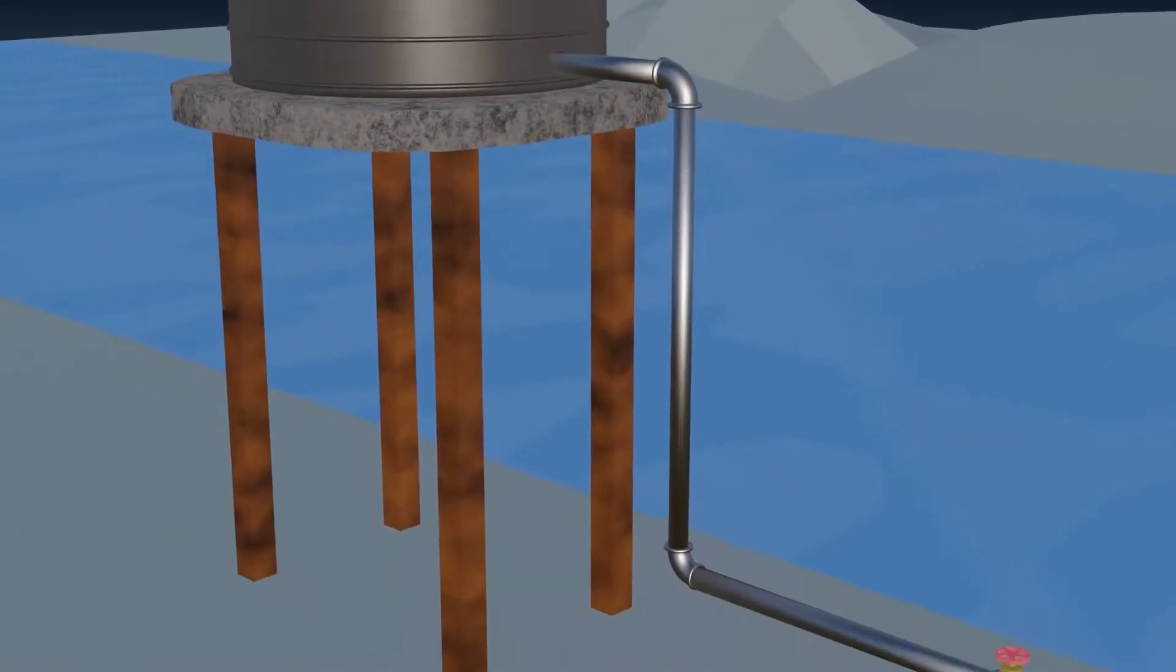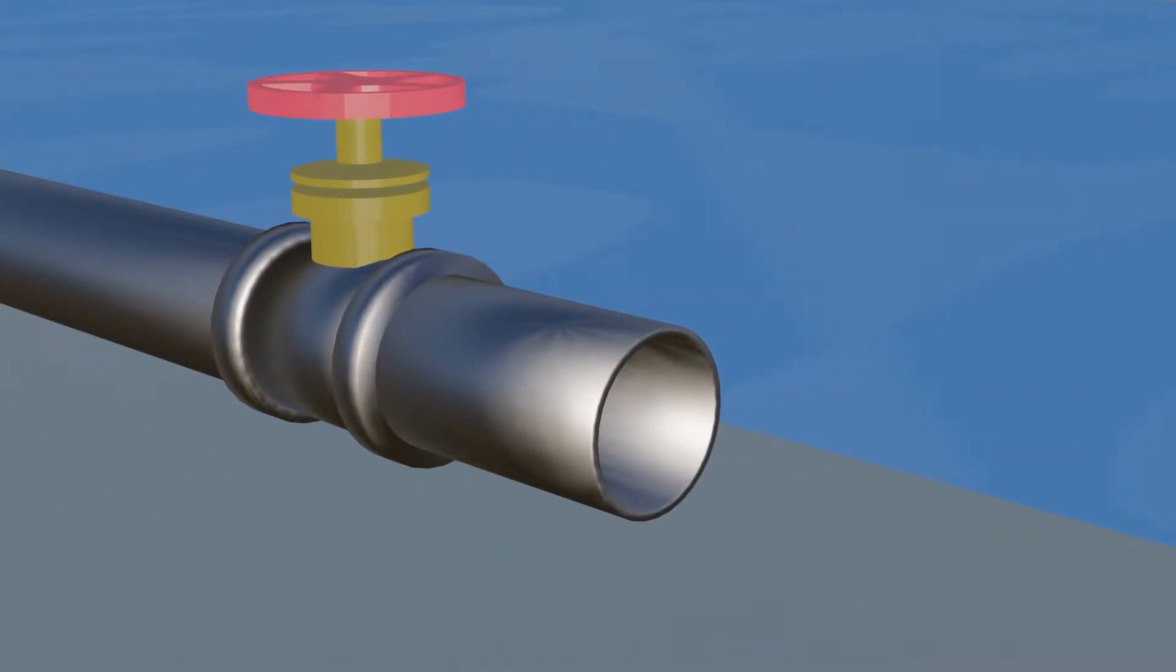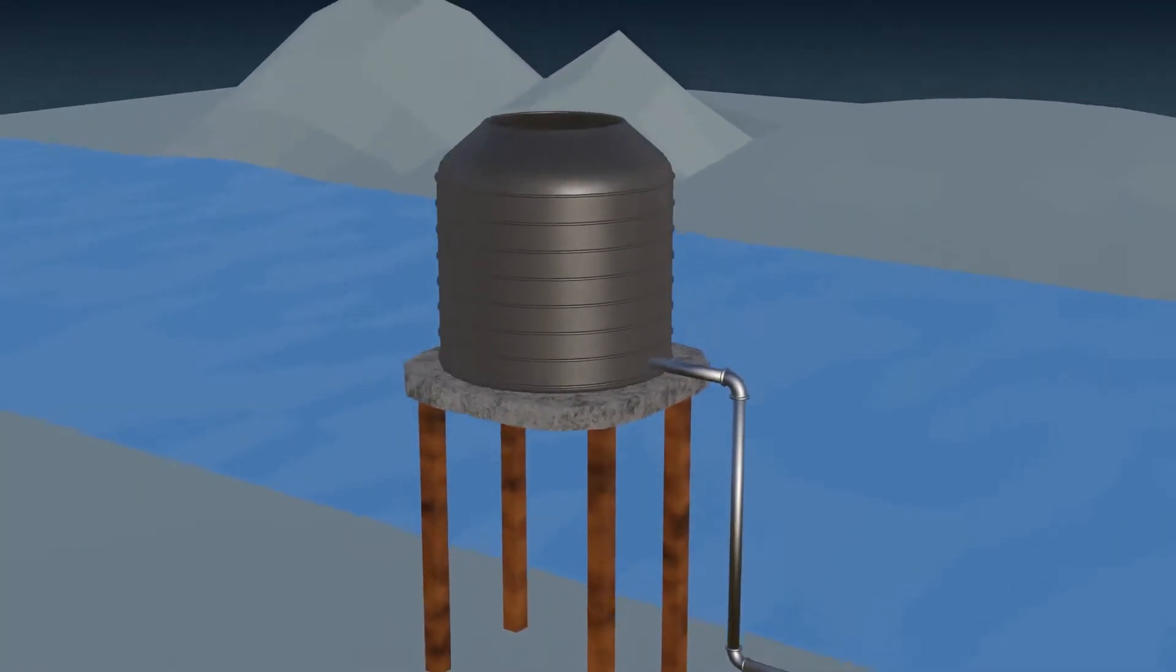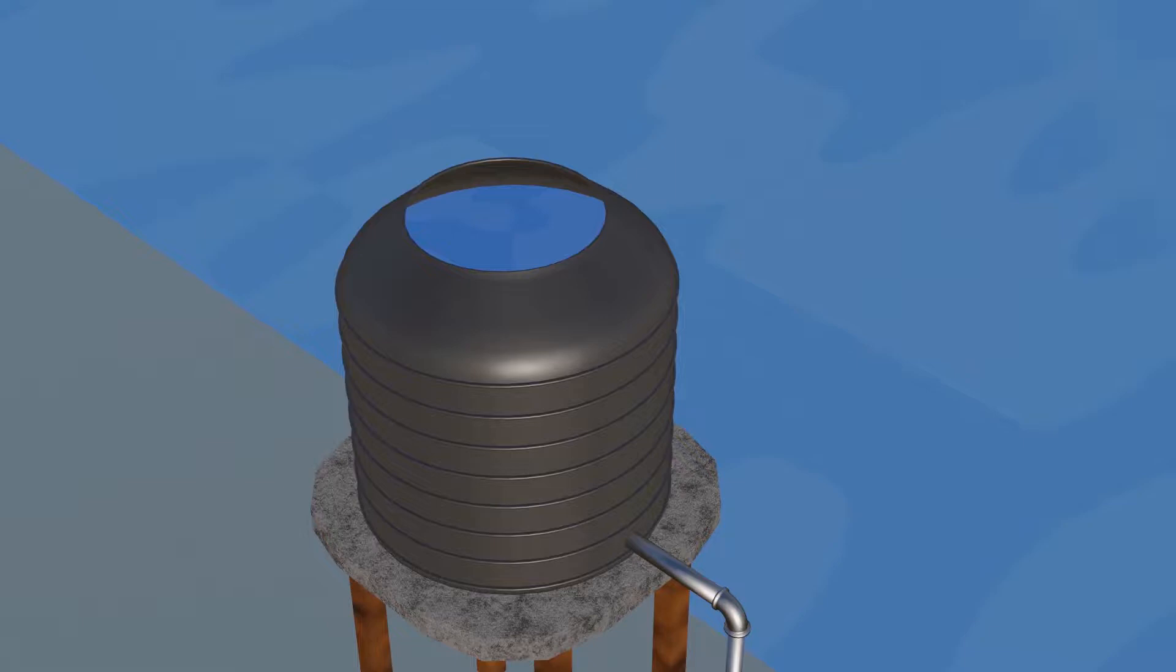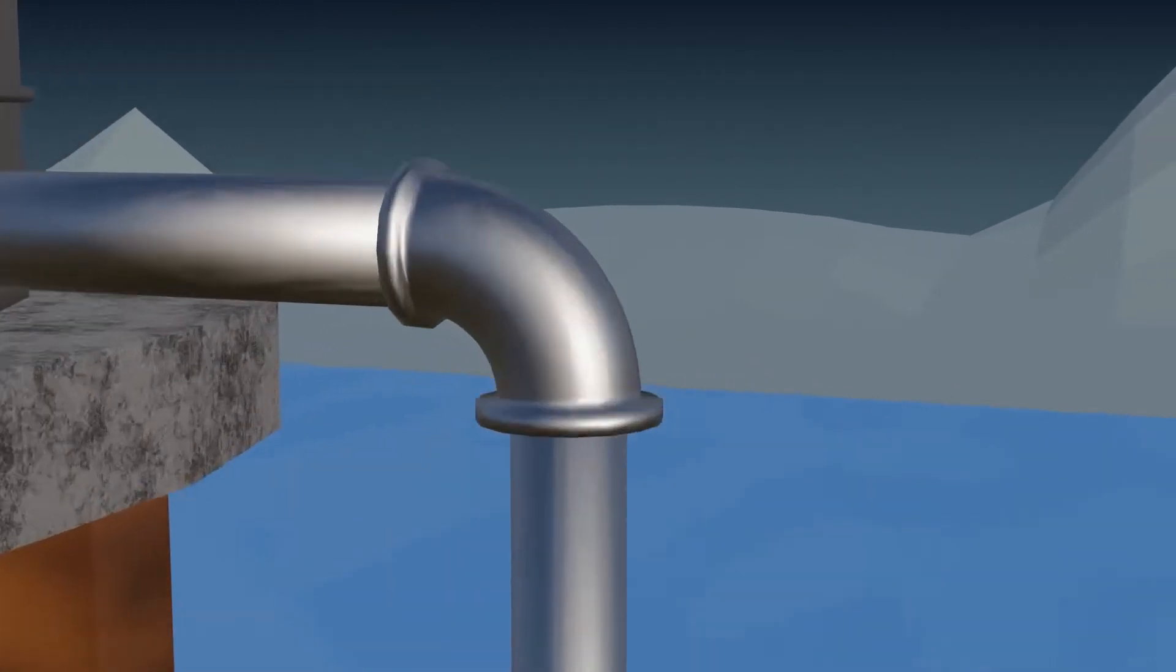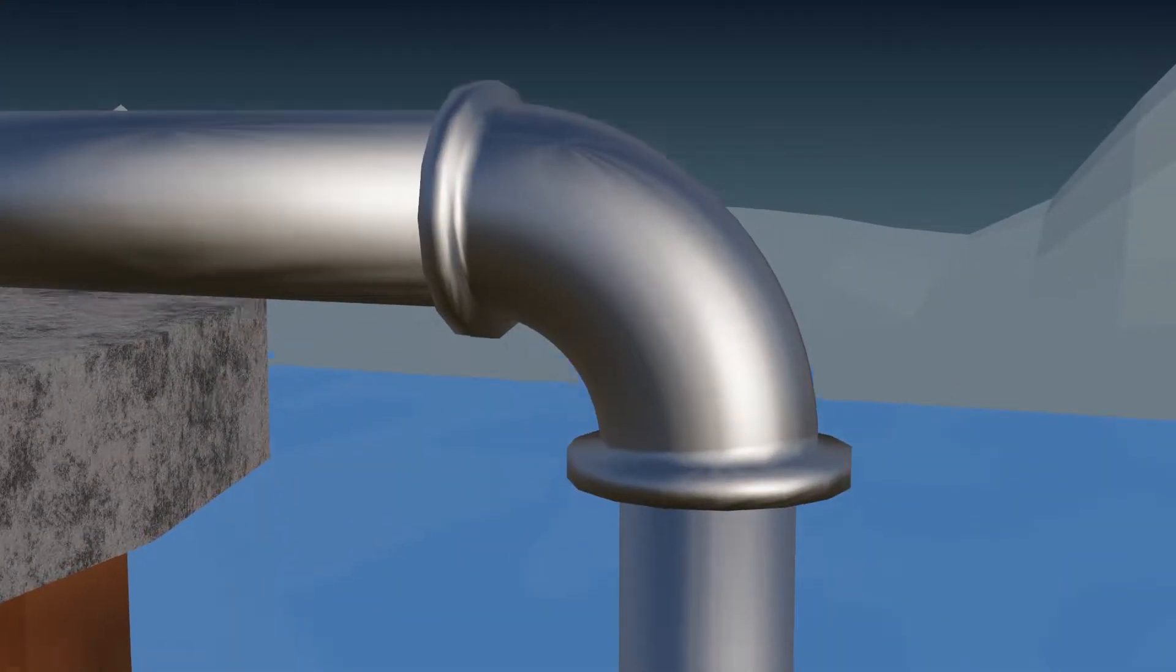Let us determine the diameter required for this water pipe. The reservoir is filled with water as shown. The pipe is fitted with elbow and a gate valve.